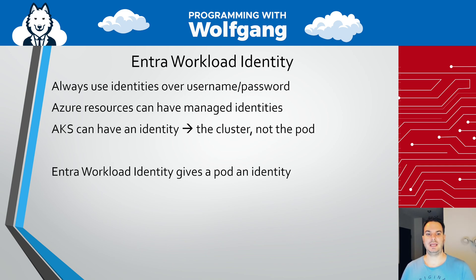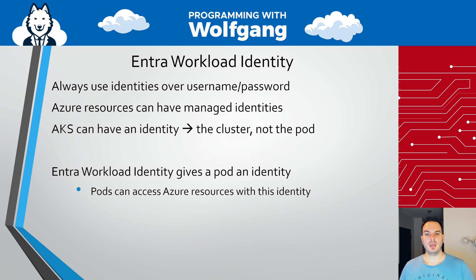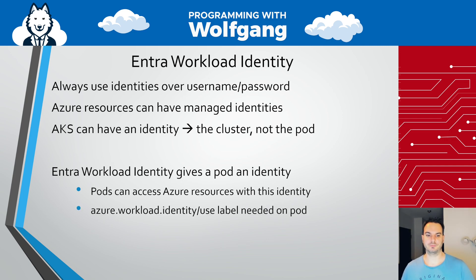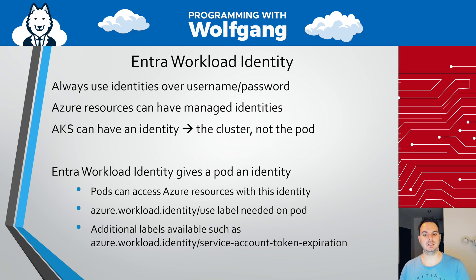And the solution for this is Entra workload identity. Because with Entra workload identity, you can give all your pods an identity. So all the pods in the test namespace get an identity and the pods in the production namespace get a different identity. And with this identity, the pods can access Azure resources securely without the need for any username or password. The only requirement your pods have is that you add the Azure workload identity use label on the pod, otherwise they're not able to use the identity. There are also additional labels available — for example, you can configure the expiration time for your token, and I will post a link in the description to the documentation. And with that, let's jump into the terminal and create a cluster, a Key Vault, and configure Entra workload identity.